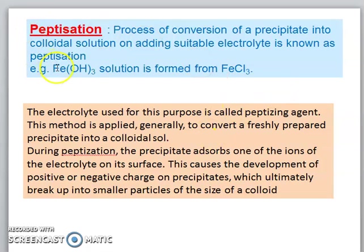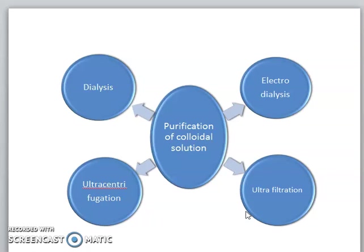The example written here — Fe(OH)₃ colloidal solution formed from FeCl₃ — is asked in exams in both direct and reverse forms. To prepare colloidal solution from a precipitate, use peptidization. Now our preparation section is complete. Next, we will do the purification of colloidal solution. The basic process used is dialysis.